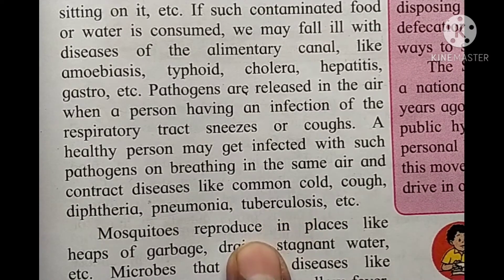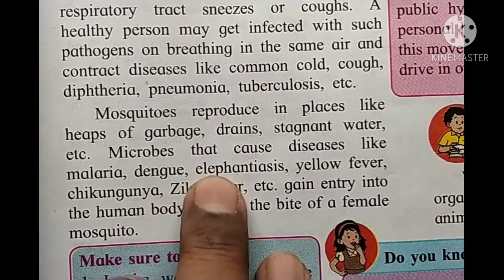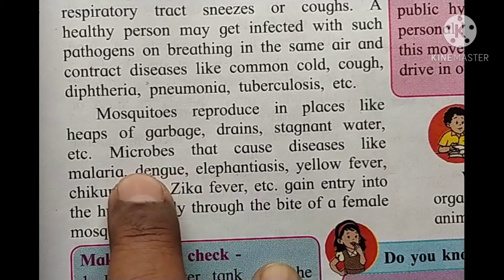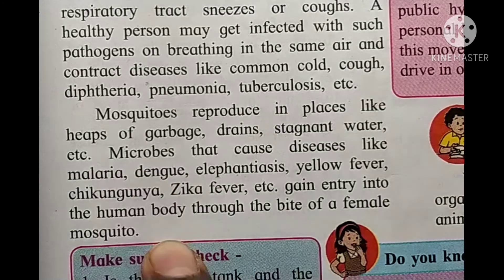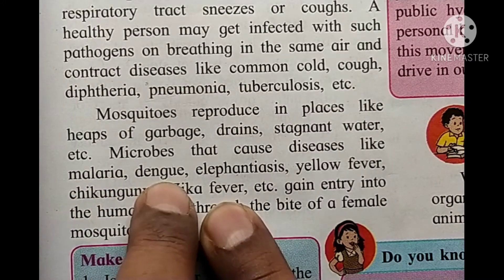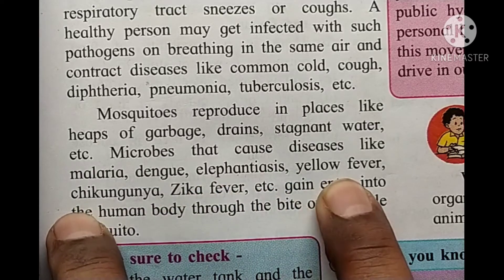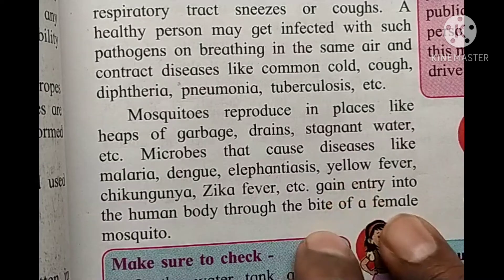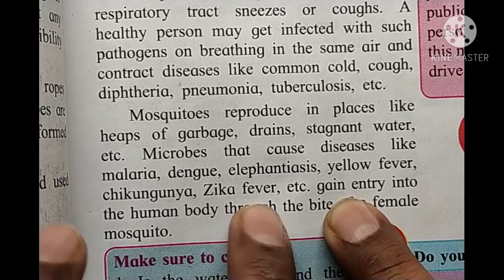Mosquitoes reproduce in places like heaps of garbage, drains, and stagnant water. Microbes that cause disease are transmitted through mosquito bites. Diseases spread by mosquitoes include malaria, dengue, filariasis (elephantiasis), yellow fever, chikungunya, and Zika fever.